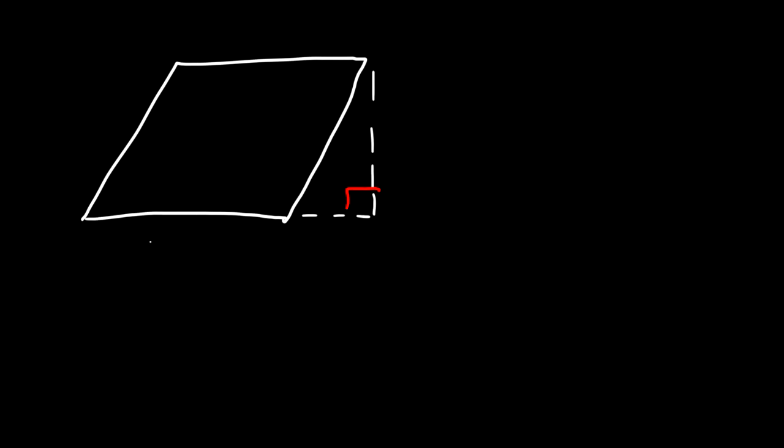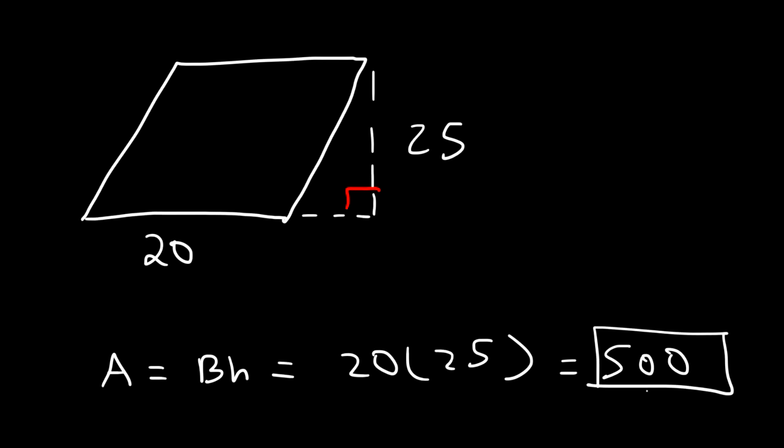So it has a base of 20 and a height of 25. So the area is simply base times height, 20 times 25, and that's going to be 500 square units. And that's basically all you need to do to find the area of a parallelogram.